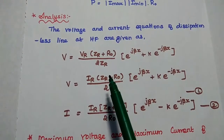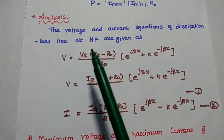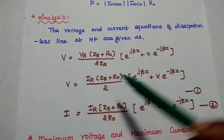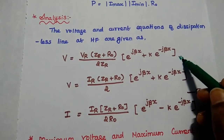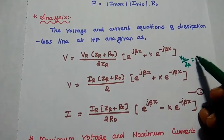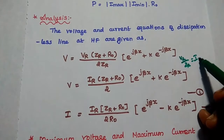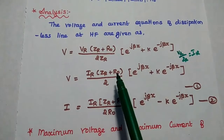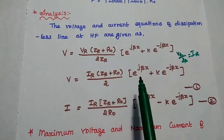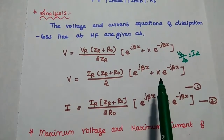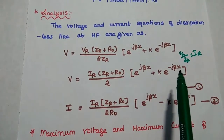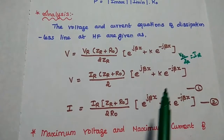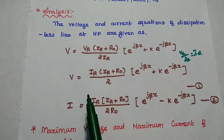We can simplify this expression since V_R / Z_R equals I_R. So the voltage equation becomes: V = I_R × (Z_R + R₀) / 2 × (e^(jβx) + K·e^(-jβx)). Consider this as the first equation — the voltage equation.